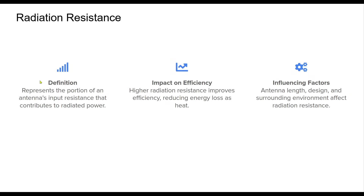Radiation resistance is a key parameter in antenna design, representing the resistance component responsible for actual signal radiation. A higher radiation resistance generally leads to better efficiency, as more power is radiated instead of being lost as heat in resistive elements. Factors such as antenna length, shape, and proximity to conductive surfaces can influence radiation resistance. Understanding and optimizing this parameter is essential for improving antenna performance and signal strength.